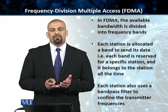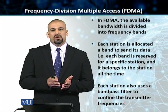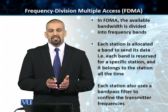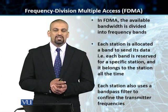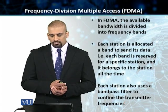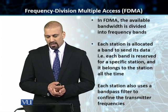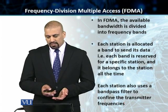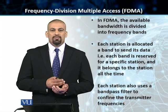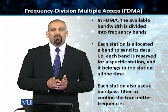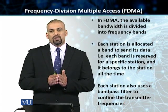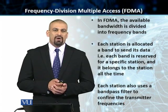Because we have different bands allocated to different stations, we can actually send data at the same time using these different frequency bands without any fear of collisions. Each station also uses a band pass filter, which is used to confine the transmitter frequencies so they don't overlap with each other.